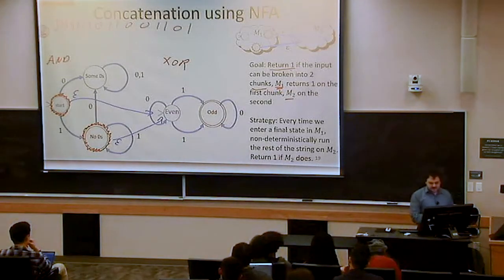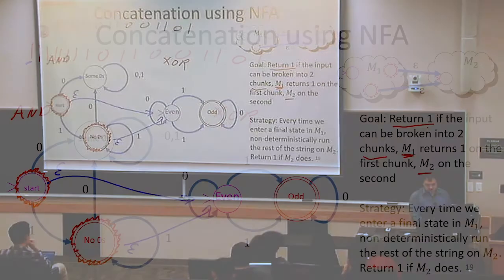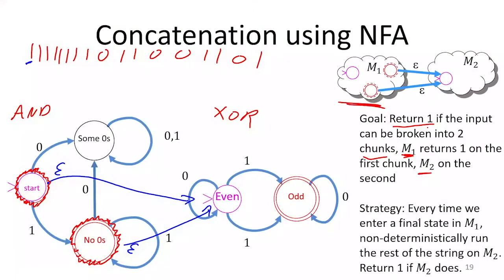In general: if we have machine M1 for the first language and machine M2 for the second language, we start in the start state of M1. Every time we reach a final state in M1, we move non-deterministically to the start state of M2 via an epsilon transition. The final states of M1 are made non-final. That is the construction.